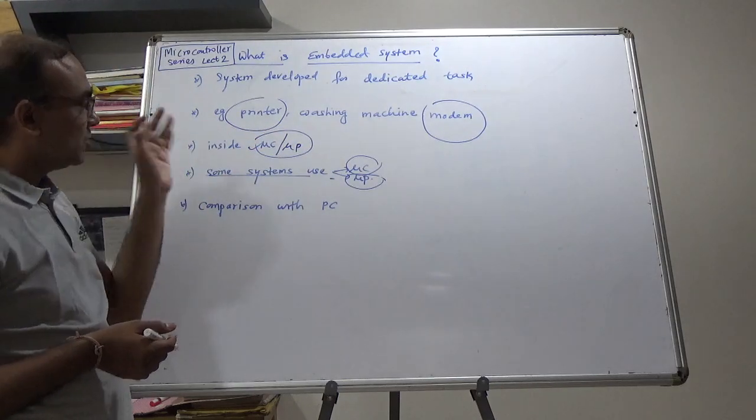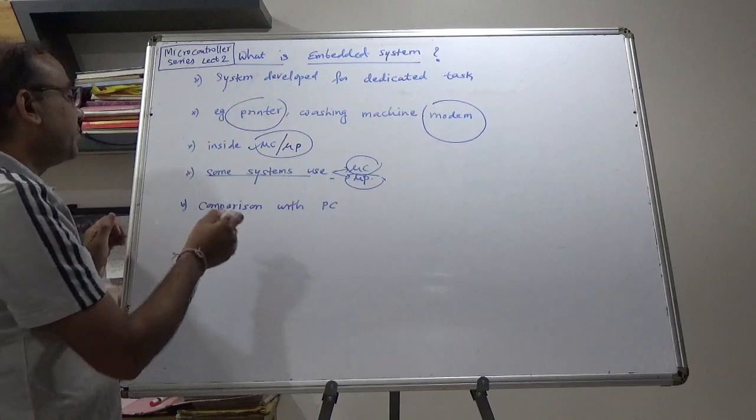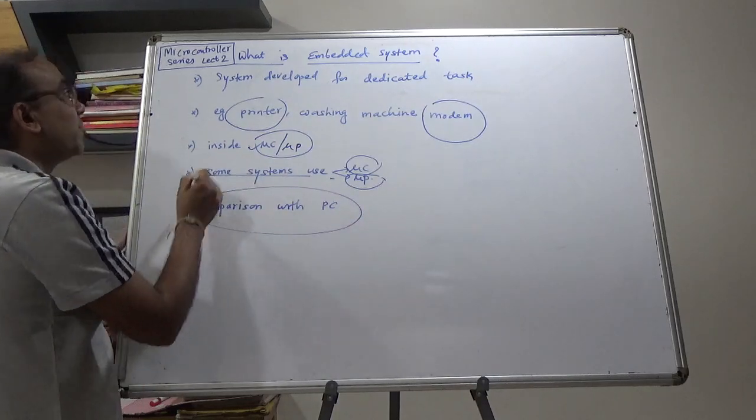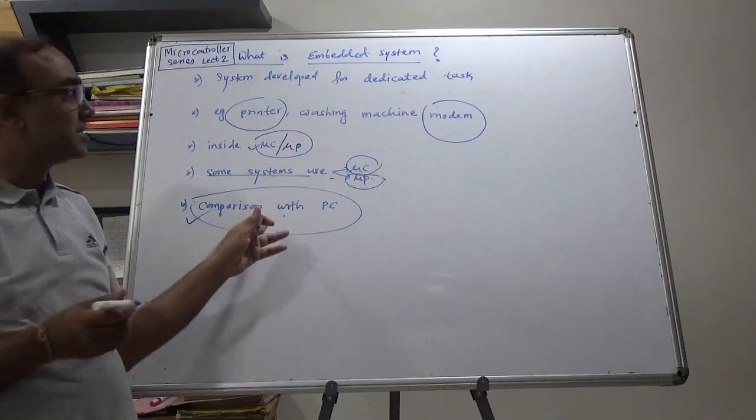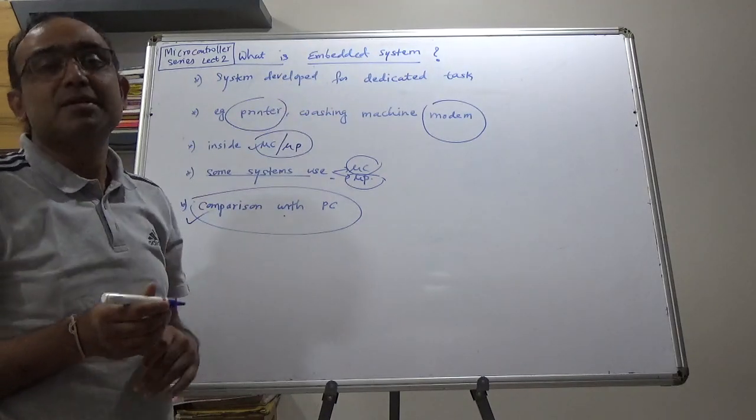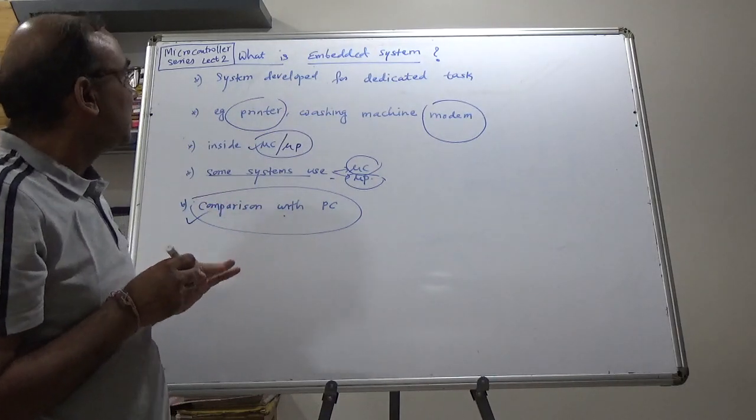So, we'll come to these topics later on. Now, we have compared embedded system with PC. So, we understood that PC is versatile whereas embedded system is meant to do some dedicated tasks.